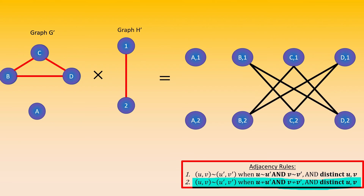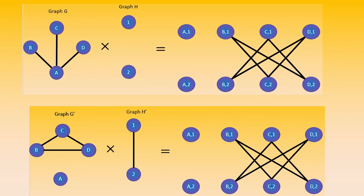Now for the second adjacency rule. What pairs of vertices in our modular product have distinct left and distinct right entries that are both not adjacent in their respective graphs? In this case, there are no such pairs. Why? Because in the right graph H, every vertex is adjacent to every other vertex. So we're finished. Surprisingly, this is the same graph as before when we took the modular product of the complements of these factor graphs.